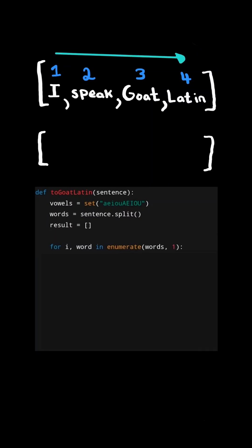We can then iterate through the words list. And using the enumerate function, we can specify that we want to start counting at index one.